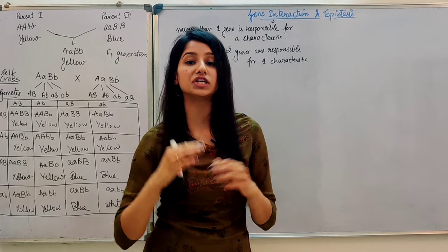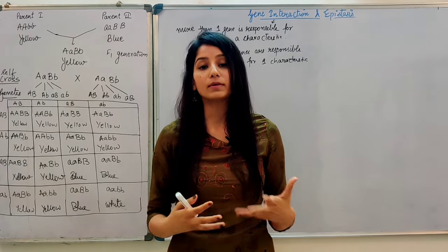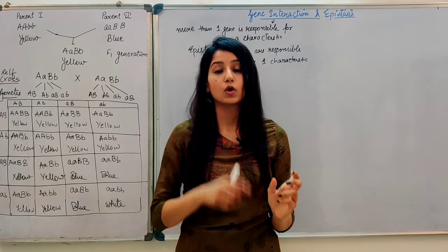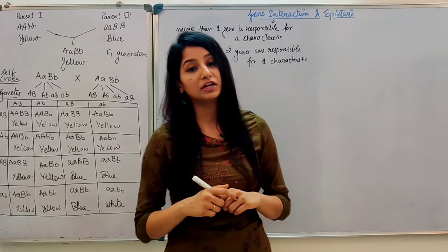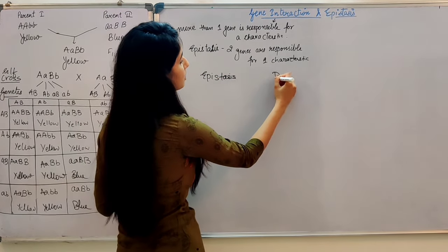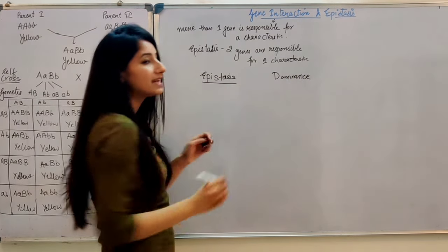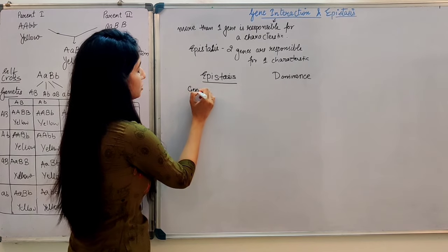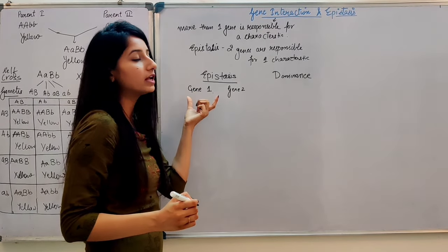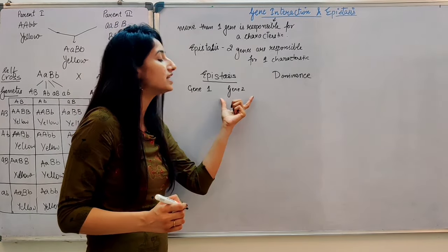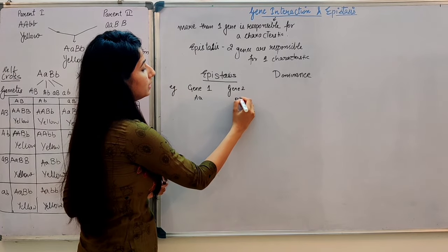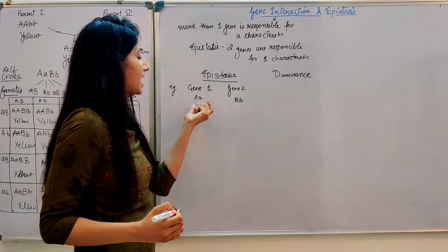What does one gene do? It masks the other gene. We have studied the law of dominance — in dominance, one allele will mask the other allele. But in epistasis, there are two genes: Gene 1 and Gene 2. One gene will suppress the other gene — for example, gene AA suppresses gene BB.